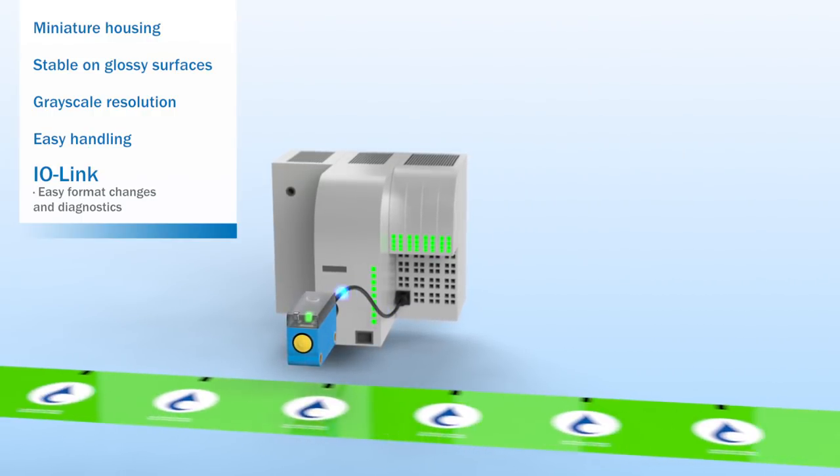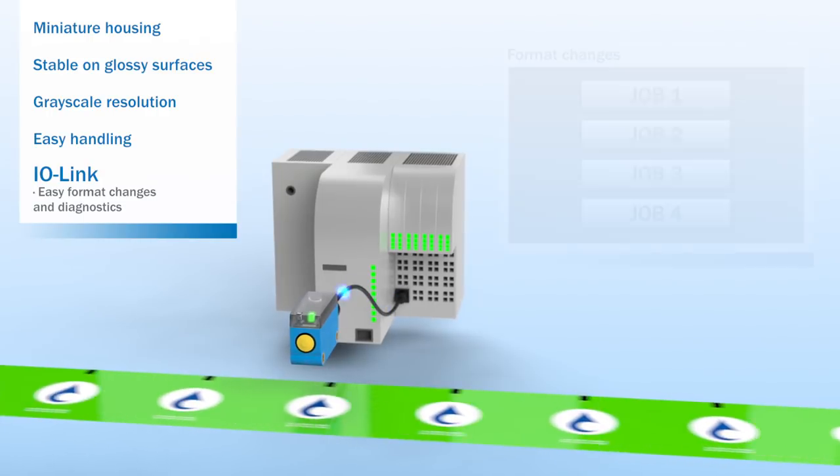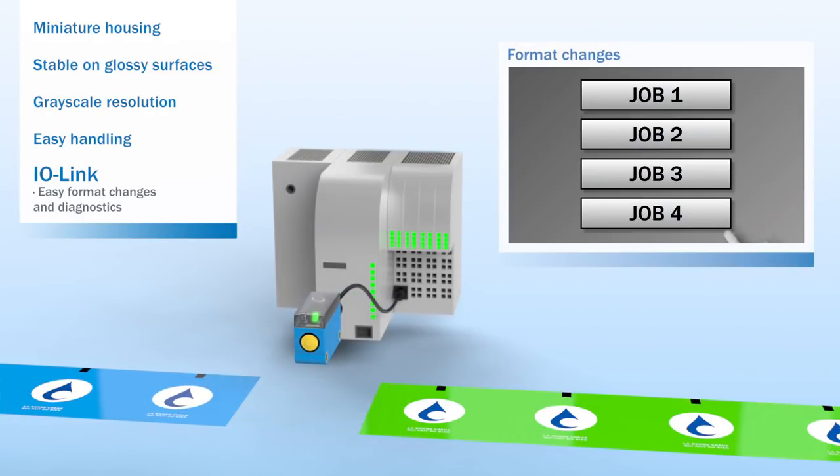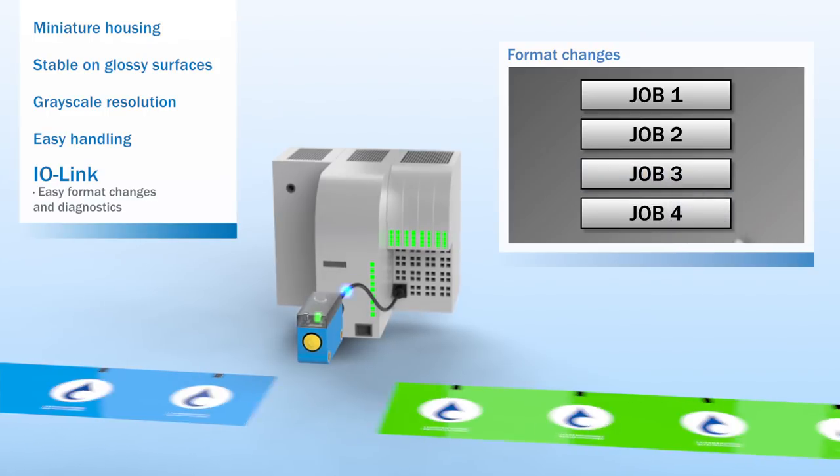Once parameters have been taught, they can be saved in the control system as jobs. Should the format change, the corresponding job is simply recalled.